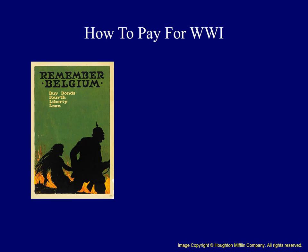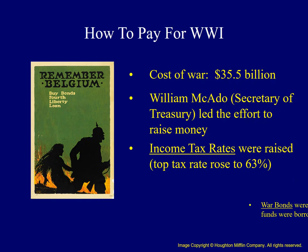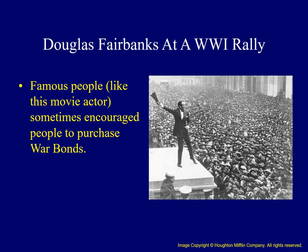Another example of government growth during World War I was seen in the steps taken to pay for the cost of the war, estimated at about $35 billion. William McAdoo, as Secretary of Treasury, was put in charge of raising the funds. Funds were primarily raised in two ways: income tax rates were raised for all Americans, and the government borrowed funds from the American people by selling war bonds. We see a poster encouraging people to purchase war bonds and show their patriotism. Famous individuals like movie actor Douglas Fairbanks were present at rallies to encourage people to purchase war bonds.